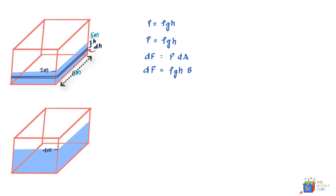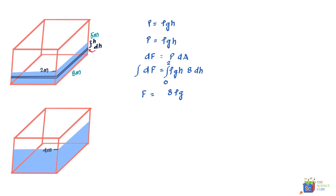To find the total force for the full water column when filled to 2 meters, we integrate both sides. Taking constants out: F = 8ρg ∫h dh from 0 to 2, which gives 8ρg × [h²/2] from 0 to 2. Solving this, F₂ = 8ρg × (4/2) = 16ρg.